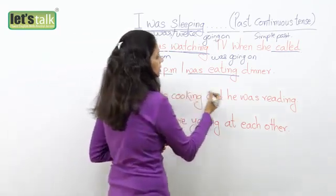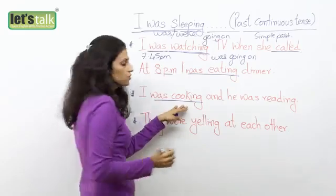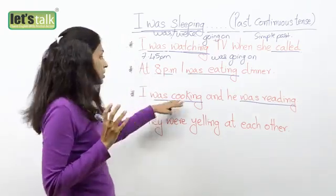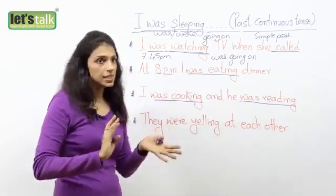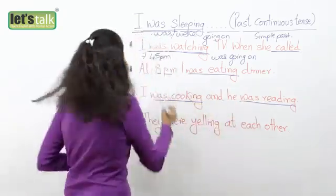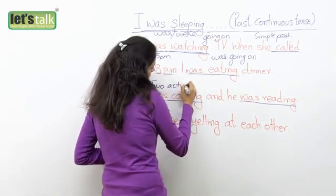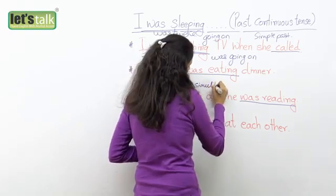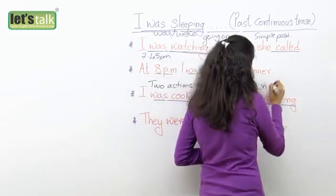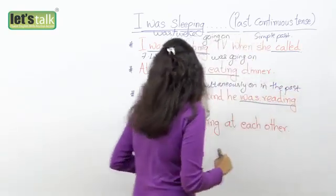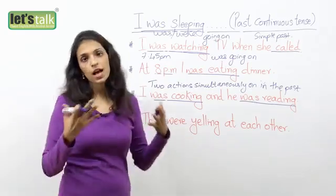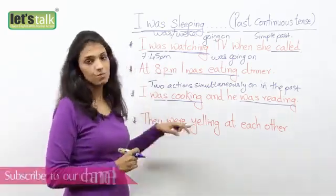Next example: 'I was cooking dinner and he was reading.' Here you have two actions going on simultaneously in the past. When you have two actions that were simultaneously happening in the past, you can use the past continuous tense for both. At the same time I was cooking, he was reading. Or: last night at the party, I was singing and my friends were dancing — two actions simultaneously happening in the past.